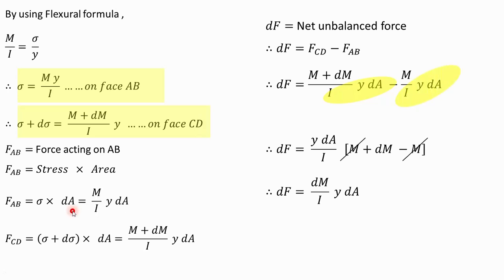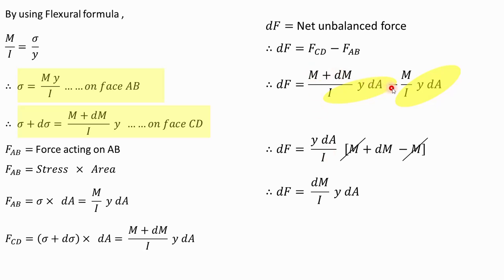The shear force on face CD will be equal to (sigma plus d-sigma) multiplied by the elementary area dA, that is stress multiplied by area equals force. Substituting the value of sigma plus d-sigma, we get (M plus dM)·Y/I · dA. The net force causing the sliding of the layers is dF = FCD minus FAB. Substituting those values and taking Y·dA/I as common, (M plus dM minus M) remains, so the MM terms cancel, giving dF = (dM/I)·Y·dA. This is the net unbalanced force required for the sliding of the layers within the section.